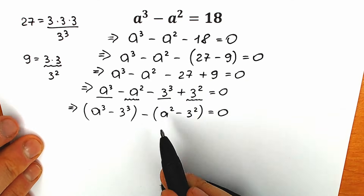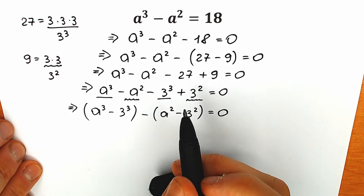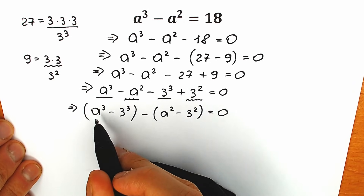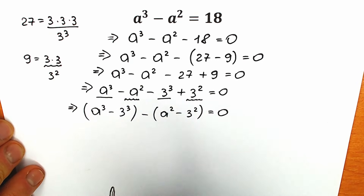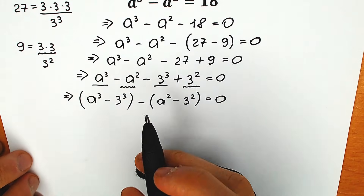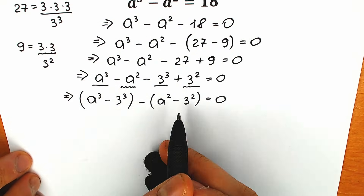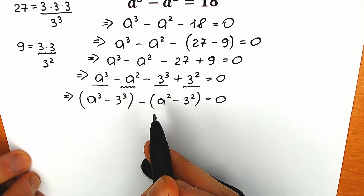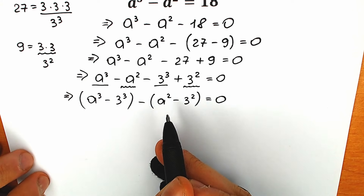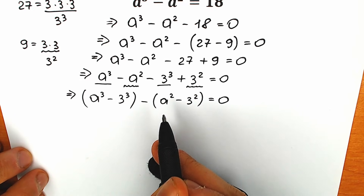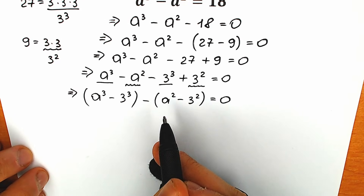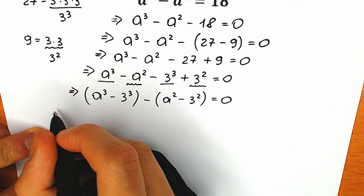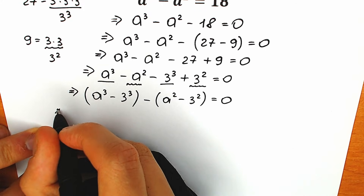I really hope you understand the solution until this moment. It's also really important that you understand how we get these expressions. Right now let's look at this from a different perspective. We have two groups: this one is called the difference of cubes, and this one we can call the difference of squares.